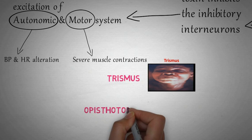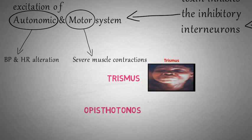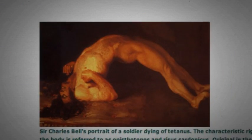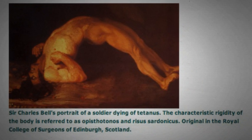When the muscle contractions occur in the back muscles, it is called opisthotonus.